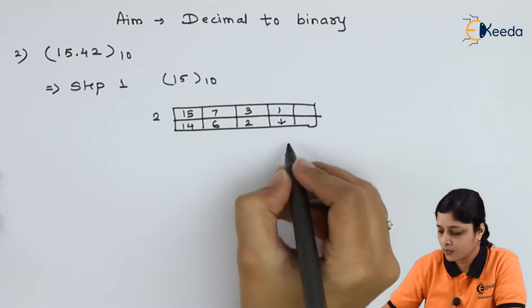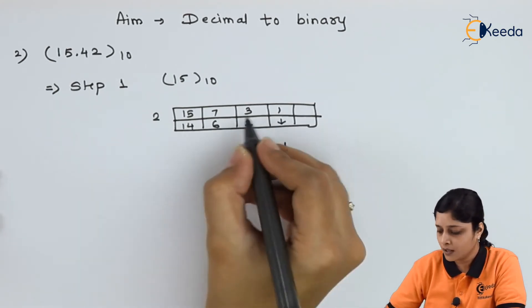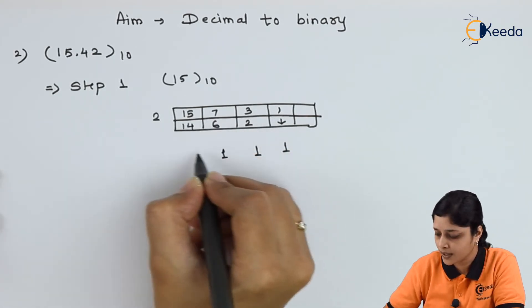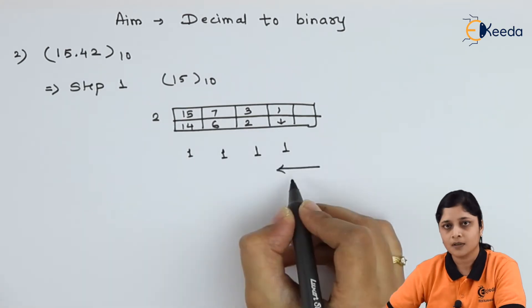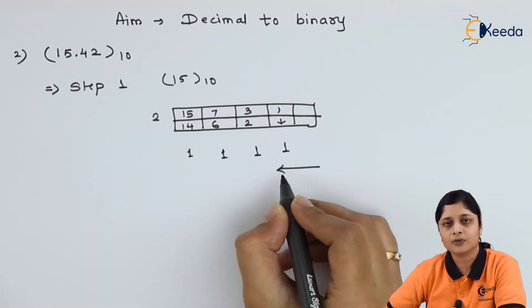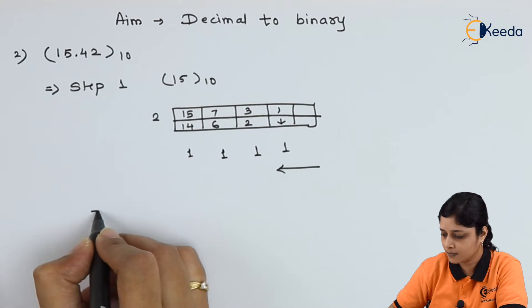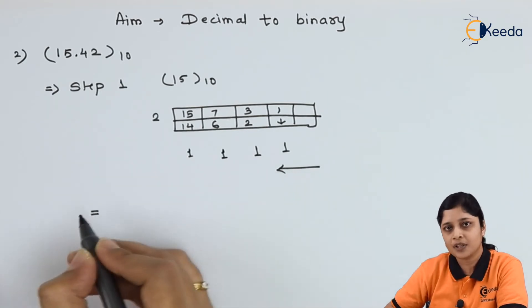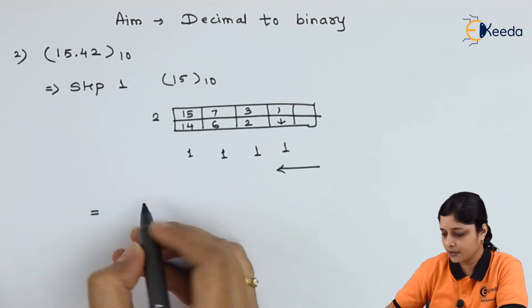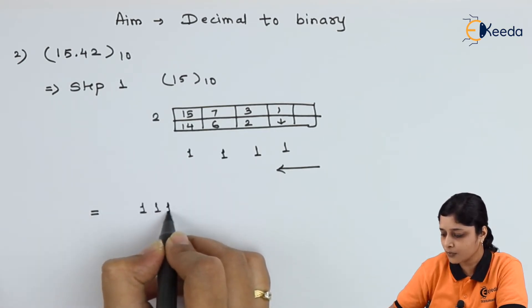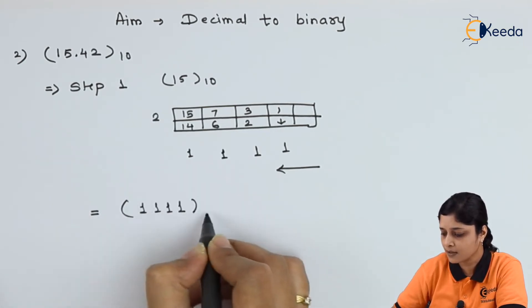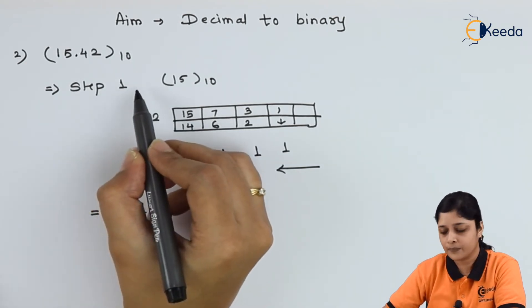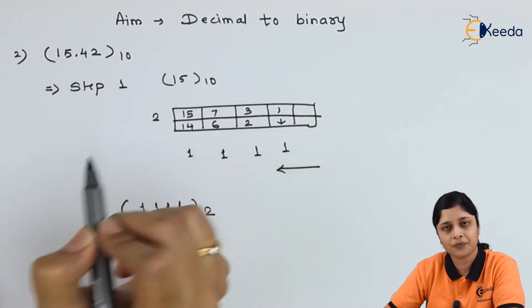Draw one arrow. Write down 1. 3 minus 2, 1, 7, 6 you will get 1, 15, 14 you will get 1. Draw arrow to write down the answer. From right side to the left side you have to write 1 1 1 1 to the base 2. This is our first step. We have taken only 15.